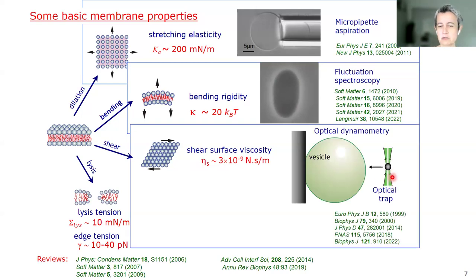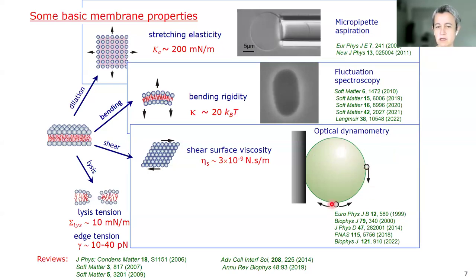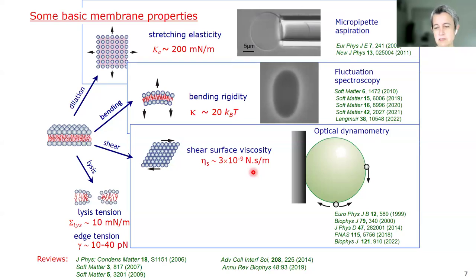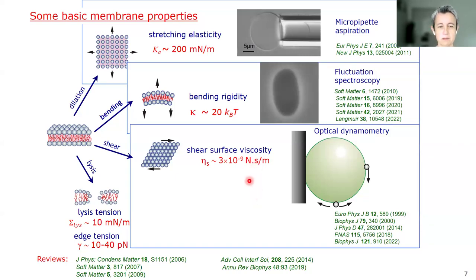The shear surface viscosity can be measured by sticking a bead or manipulating it with optical tweezers and steering it along the membrane. The number you get, when converted into bulk viscosity, is around a thousand times the viscosity of water. Despite this, movement of lipid species on the membrane is easy simply because the membrane is thin and dissipation occurs into the environment.